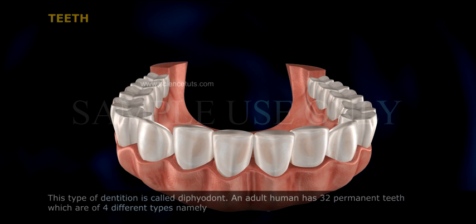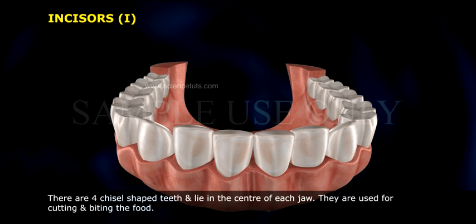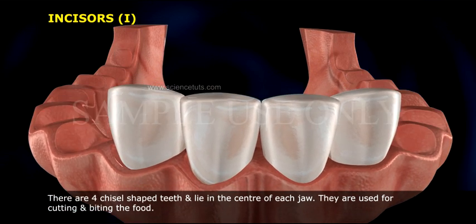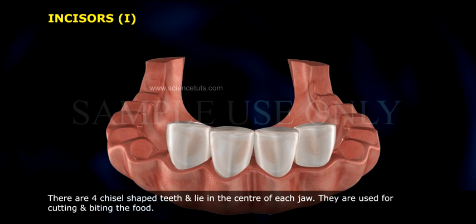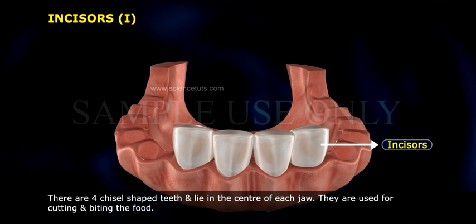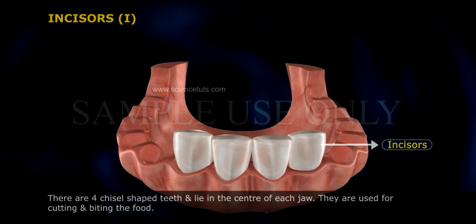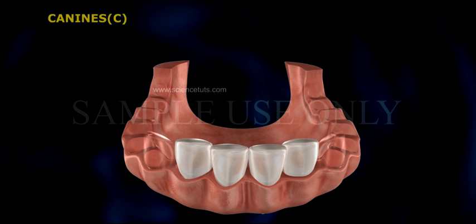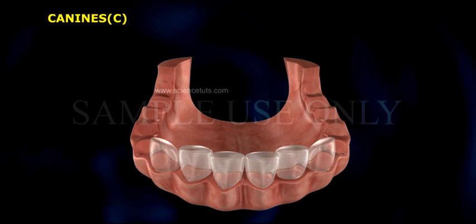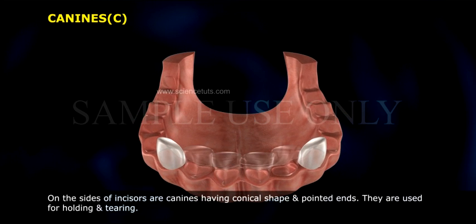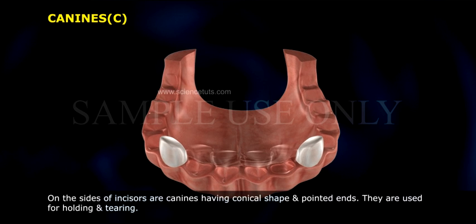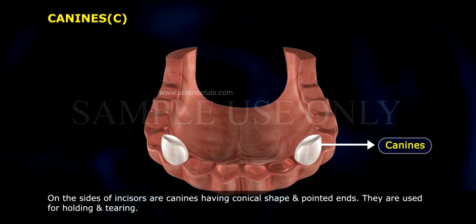An adult human has 32 permanent teeth, which are of four different types. Incisors (I): there are four chisel-shaped teeth lying in the center of each jaw. They are used for cutting and biting the food.